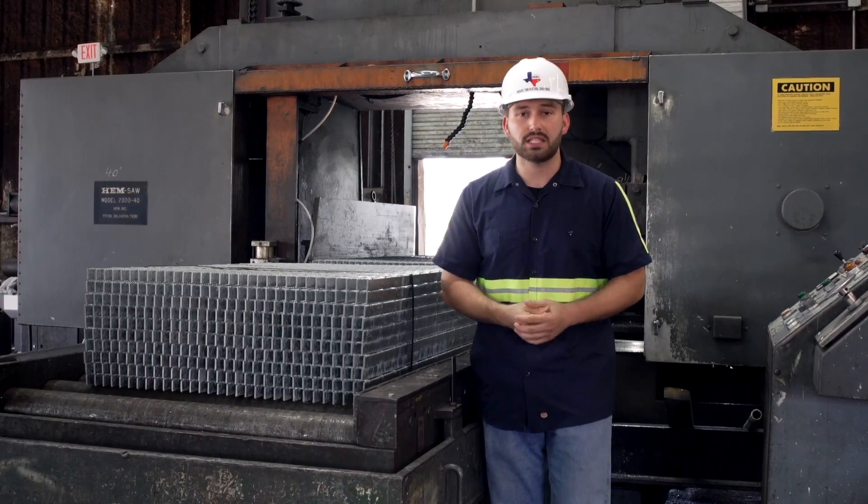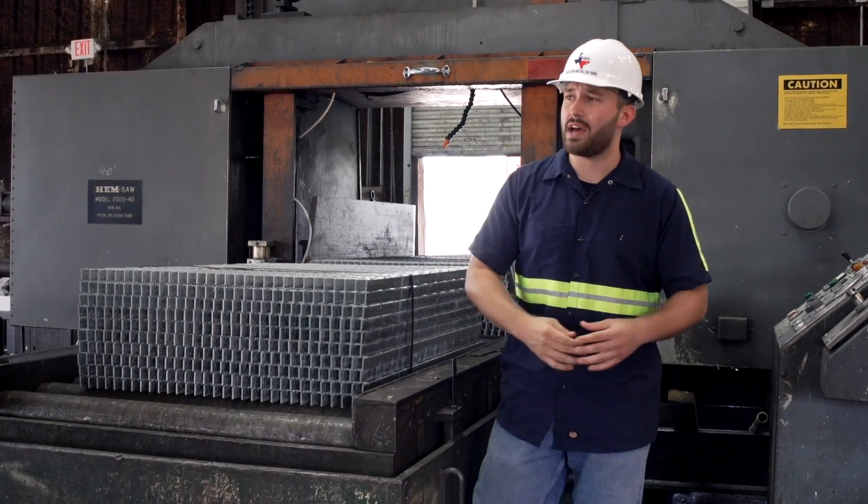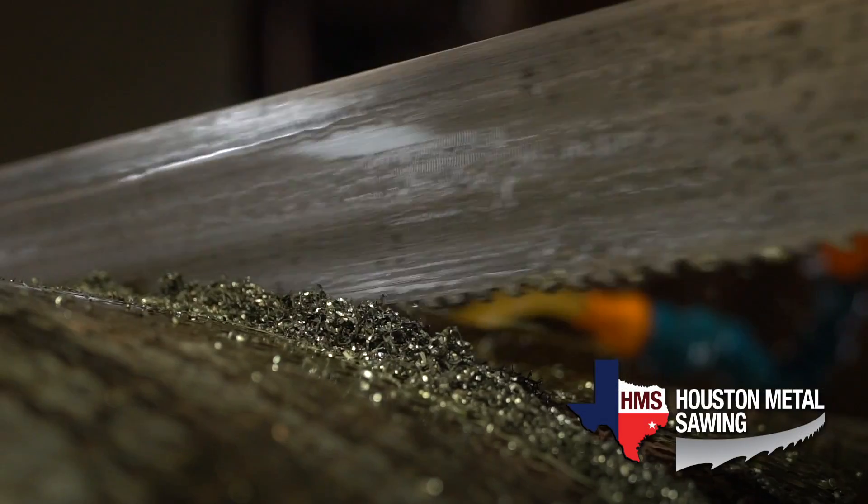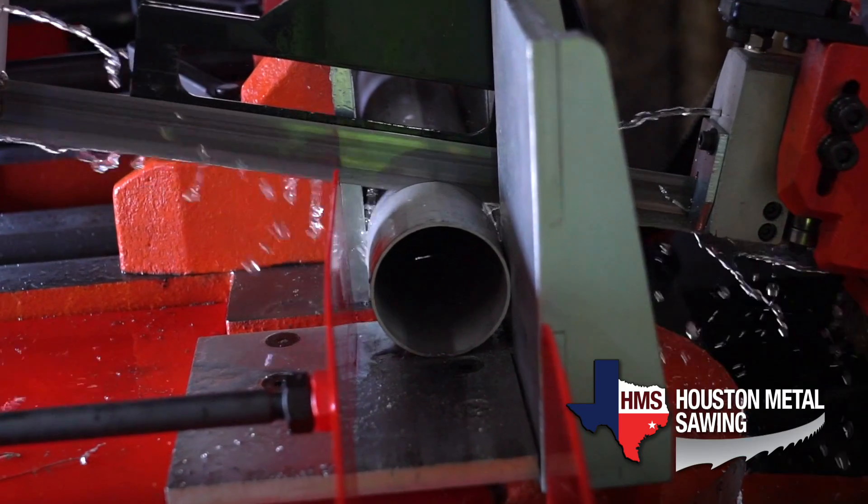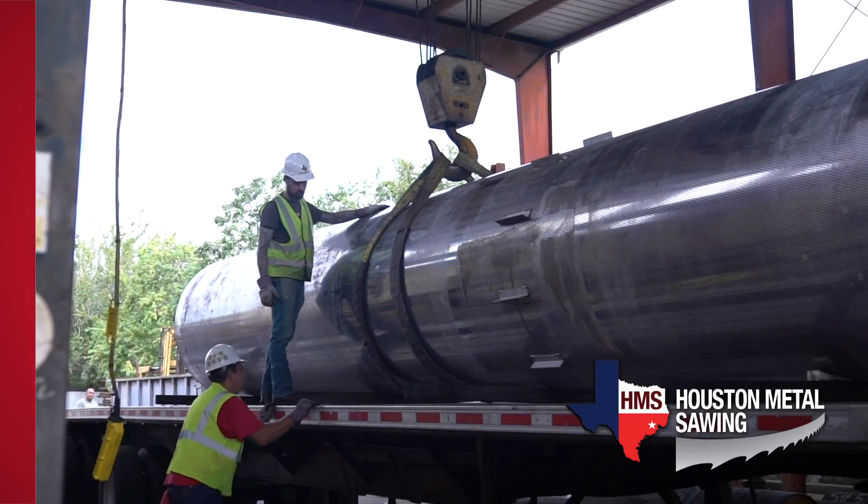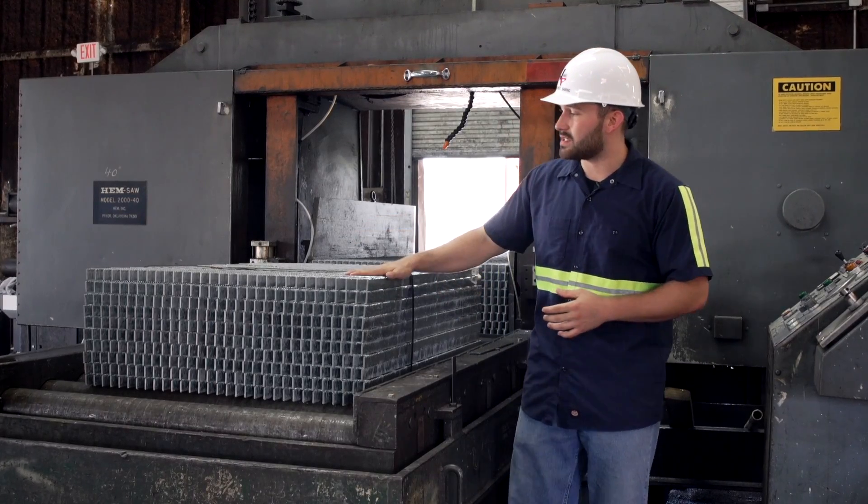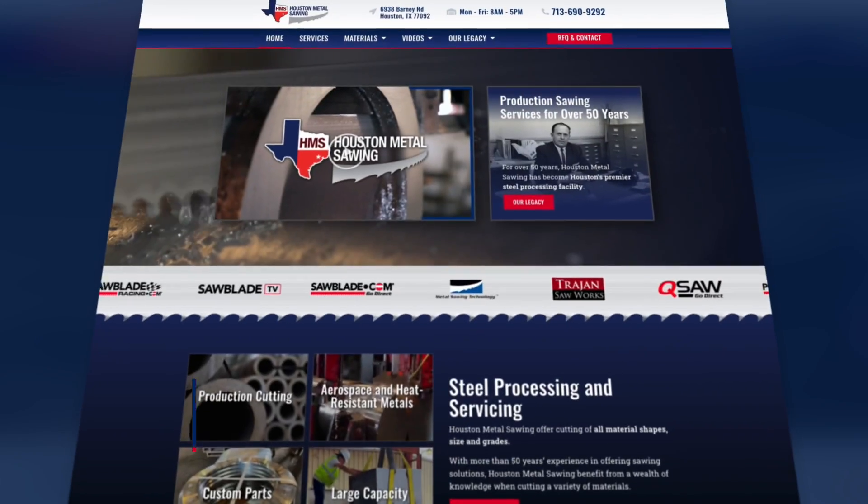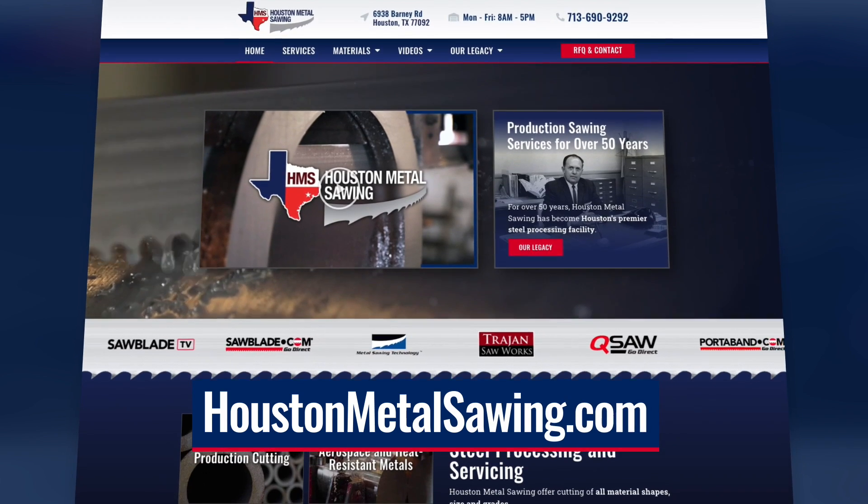Like I said, Houston Metal Sawing has been in the industry for over 50 years, and we have a vast variety of machines from horizontal from 3/8 all the way up to 5-foot cut capacity, and we service everything with our 25-ton crane. So if you have any complex cuts or something simple, request a quote at HoustonMetalSawing.com or give us a call.